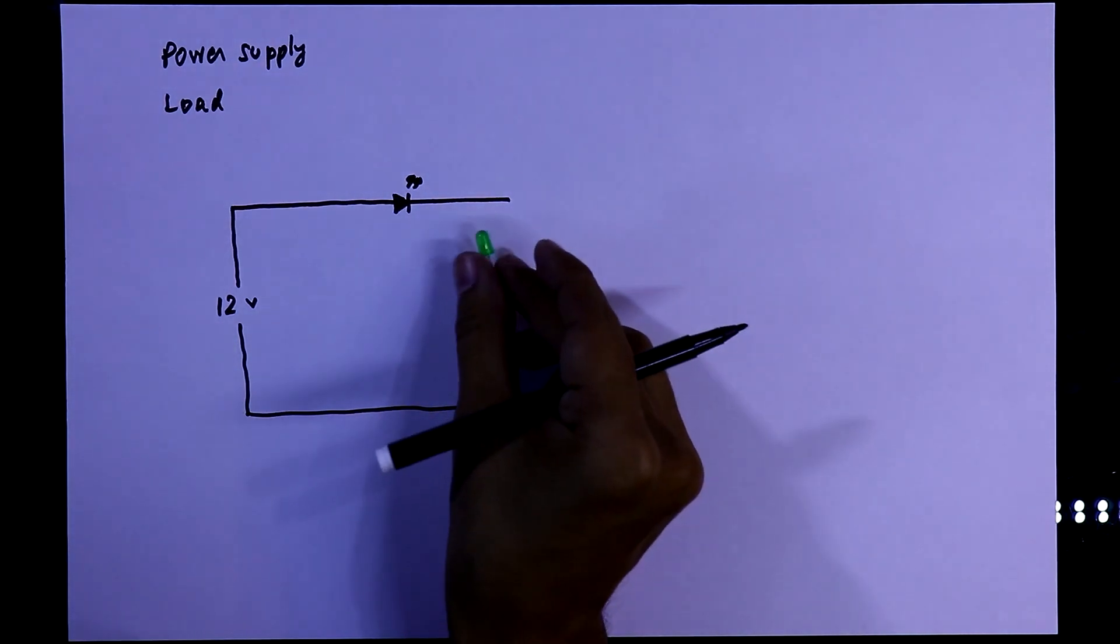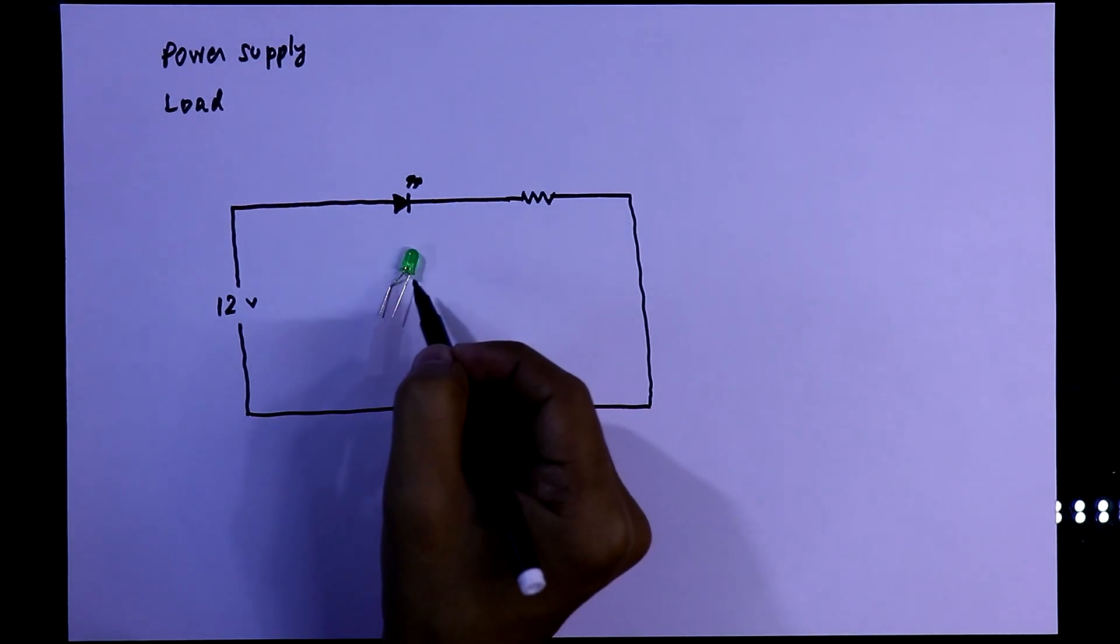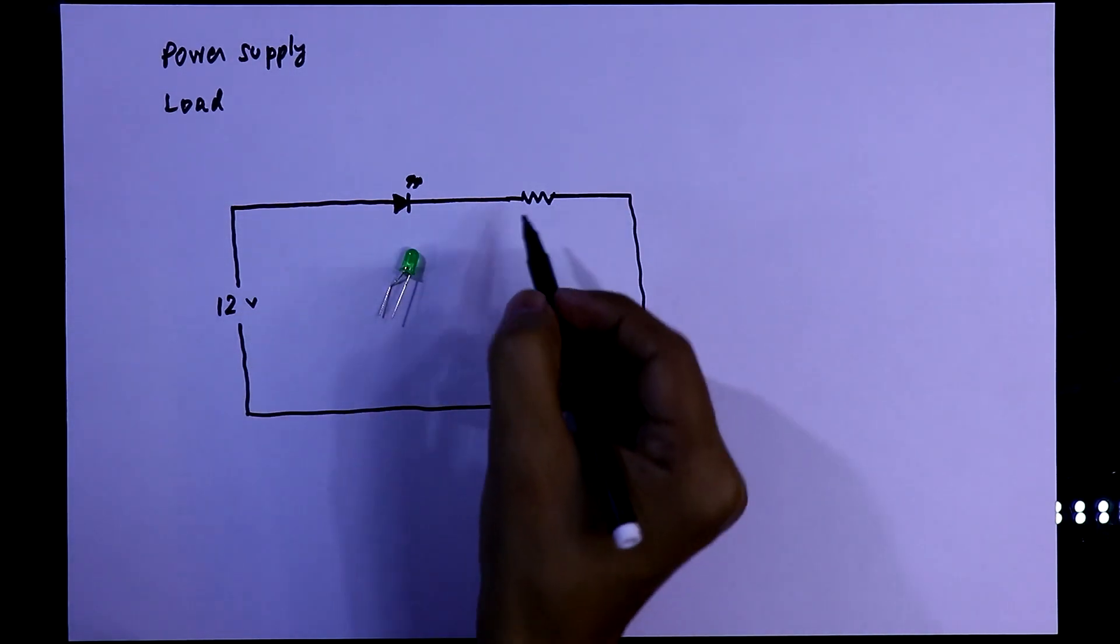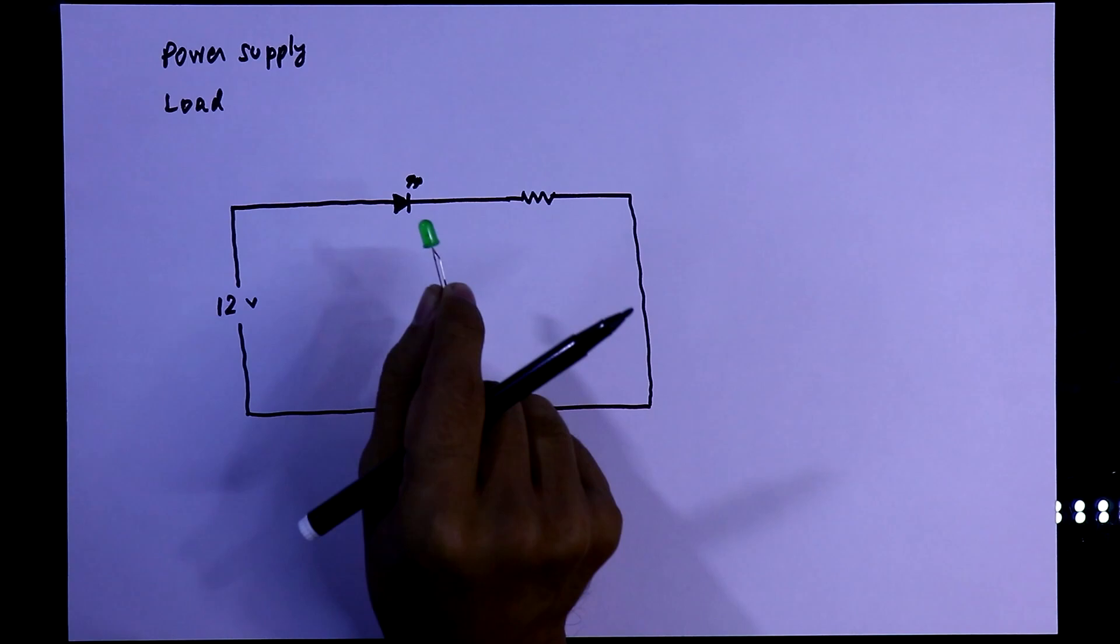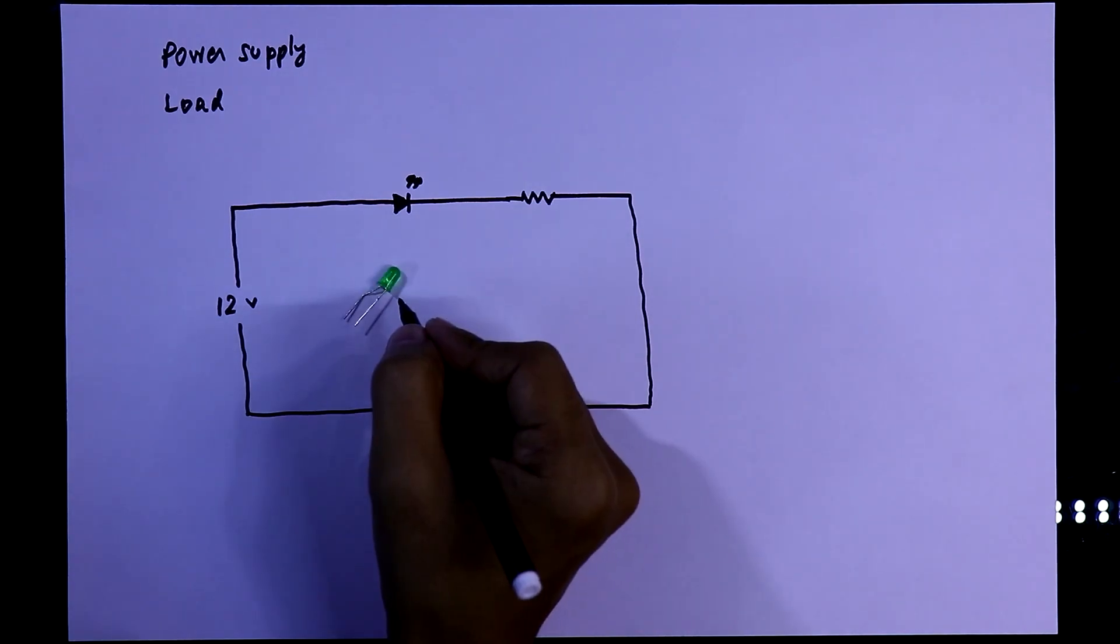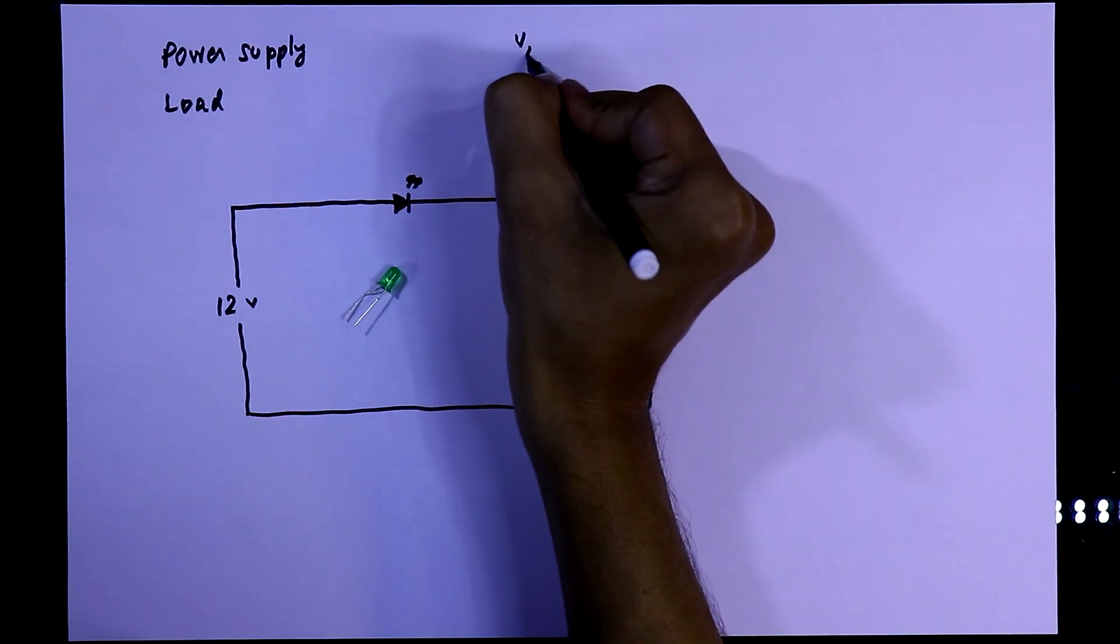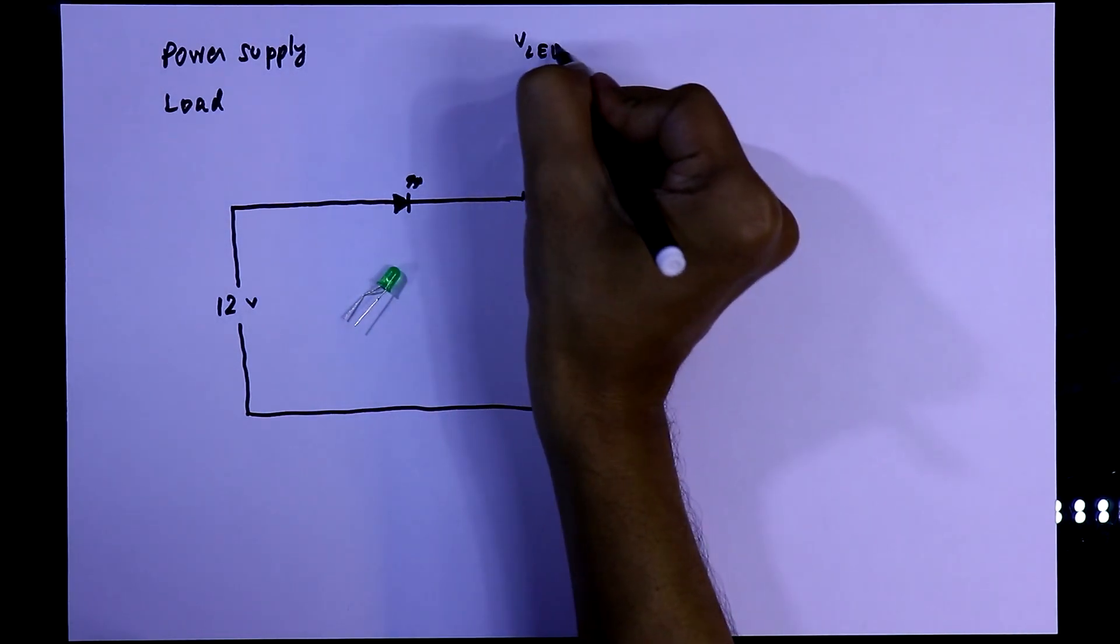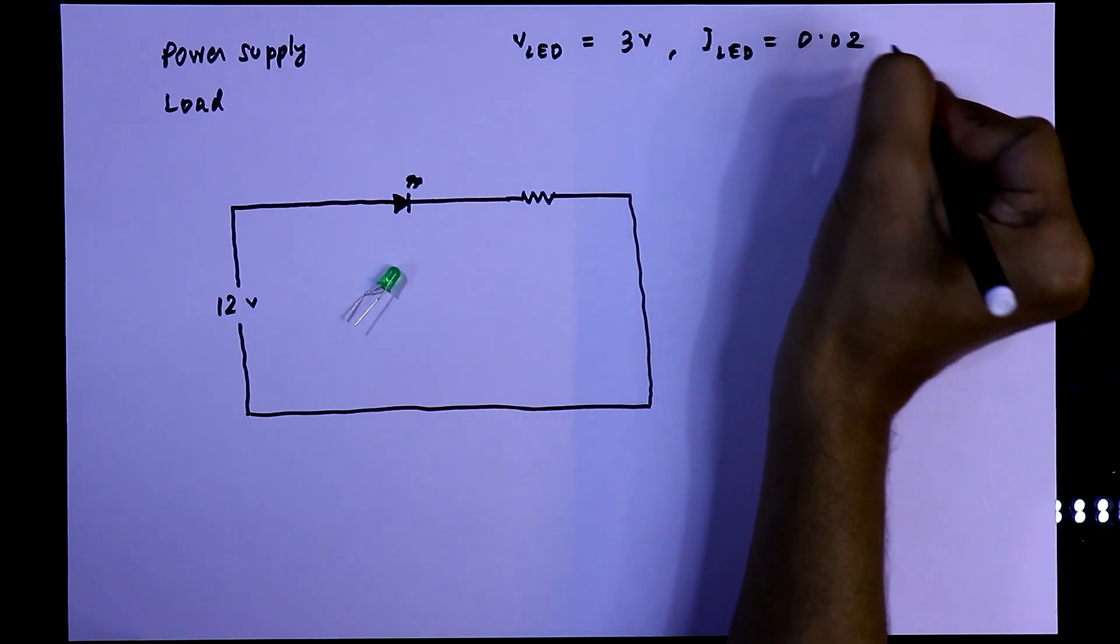This type of LED, 5mm LED. We cannot use this LED at 12V, so we have to use a resistor. Now to calculate the resistor value, we have to know something about this LED, the forward voltage drop and the forward current. And from the datasheet, we know that forward voltage drop is 3V and forward current through the LED is 20mA.